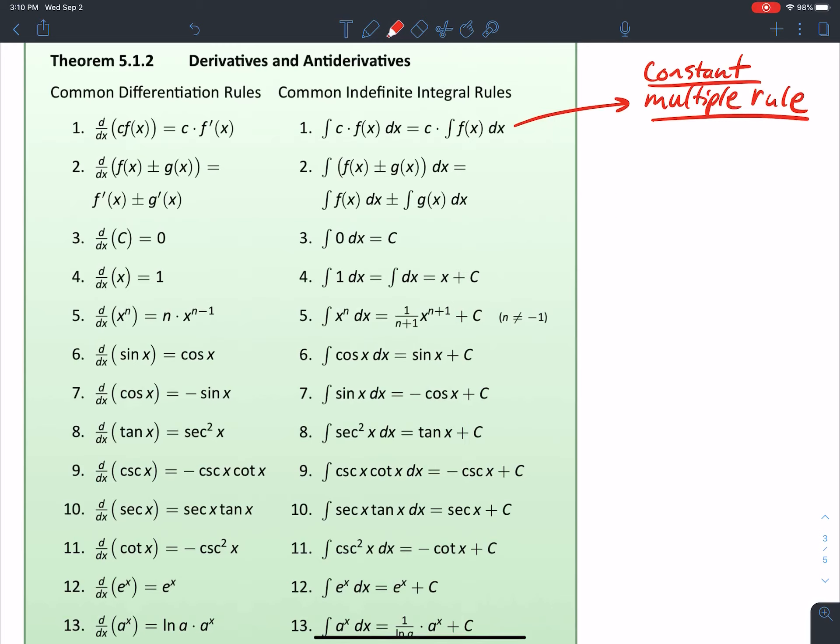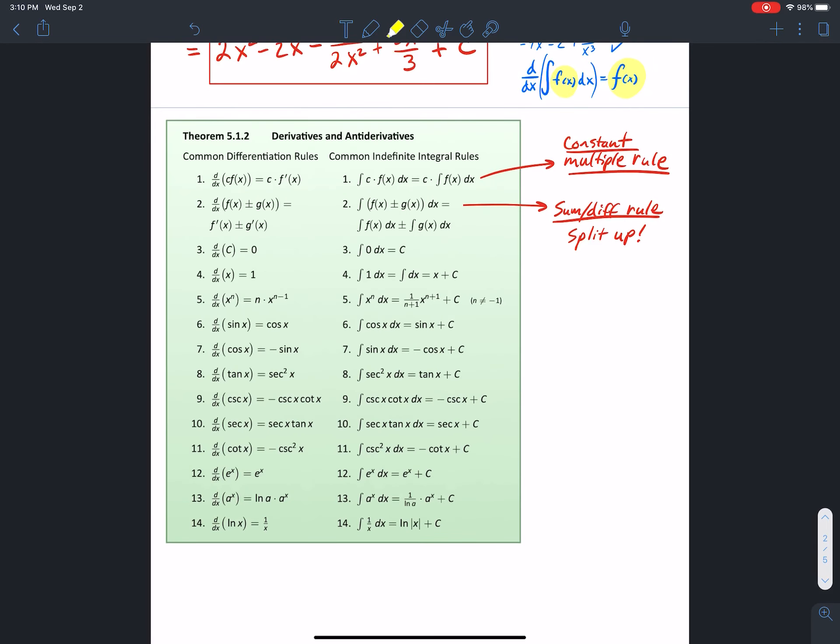The next one we talked about earlier, the sum and difference rule in a previous video. This is how we are able to split it up and divide and conquer an integral. So this allows us to divide the integral up over plus and minuses, and it becomes the integral. Basically, all we're saying here is that the integral of the sum is equal to the sum of the integrals, or the integral of the difference is equal to the difference of the two integrals.